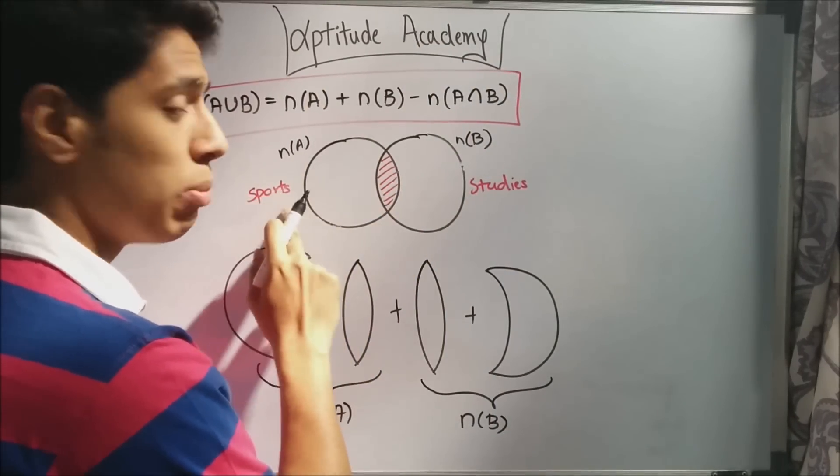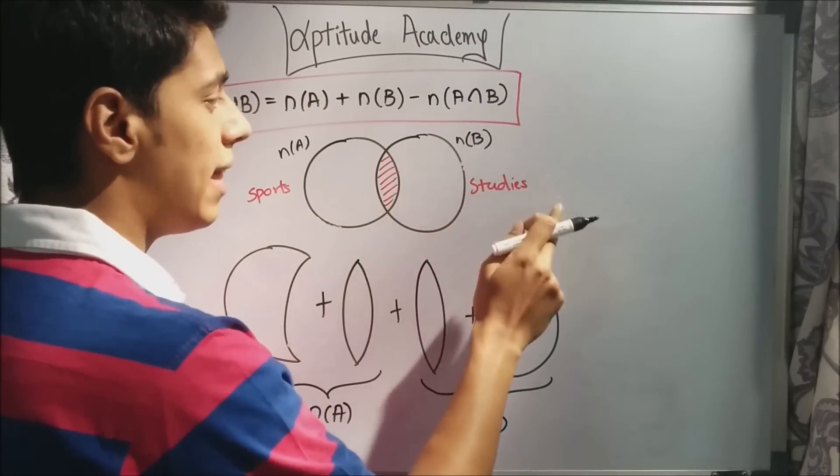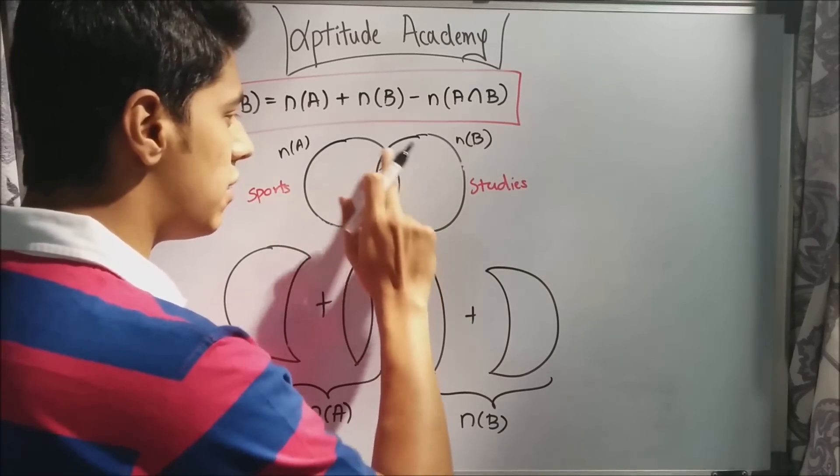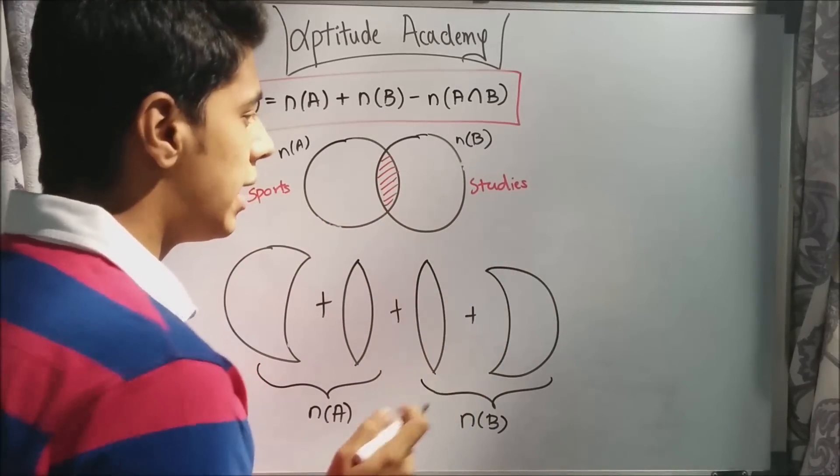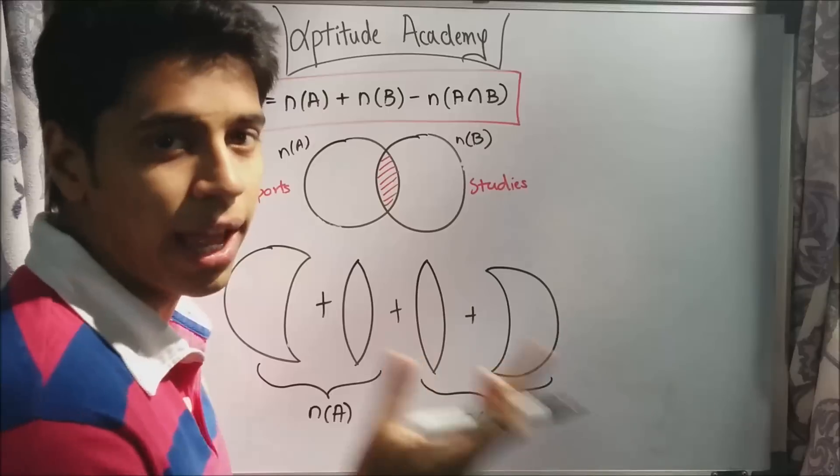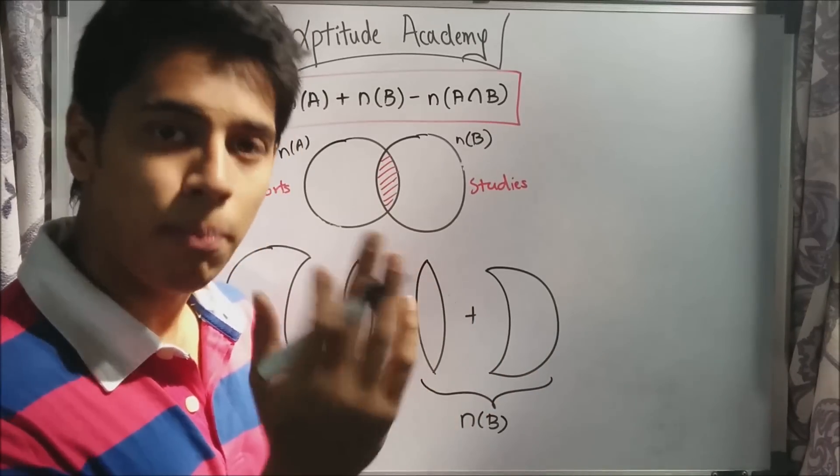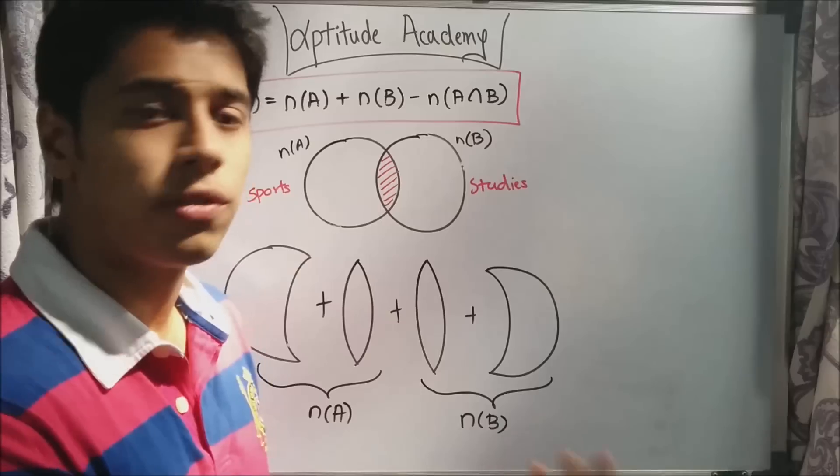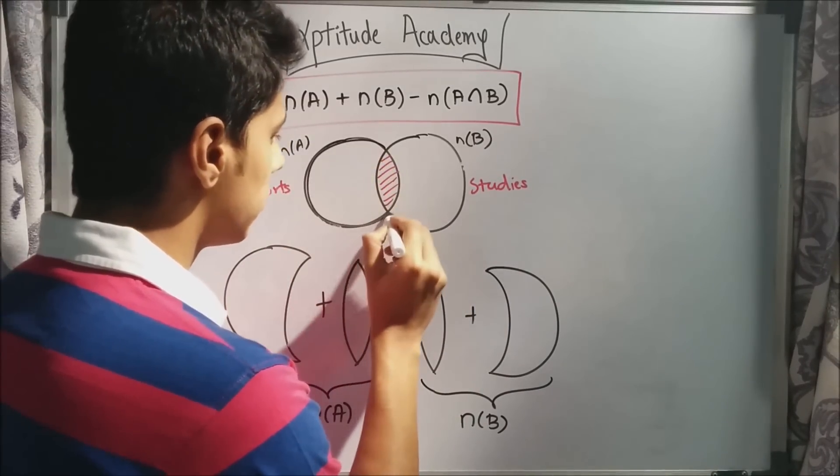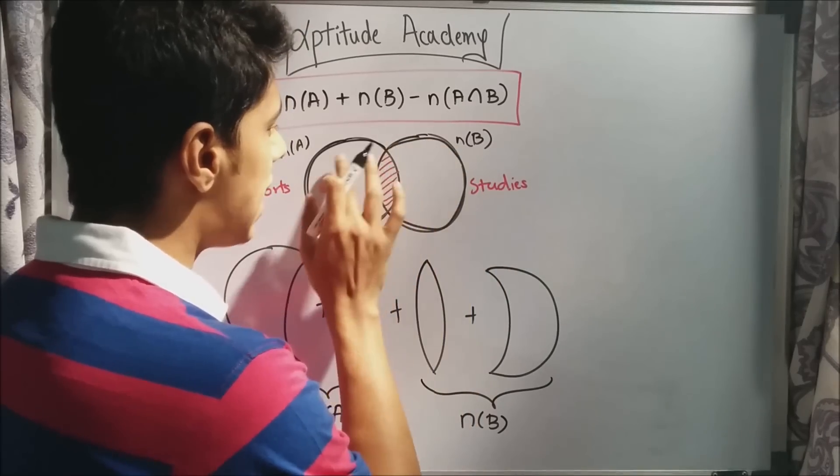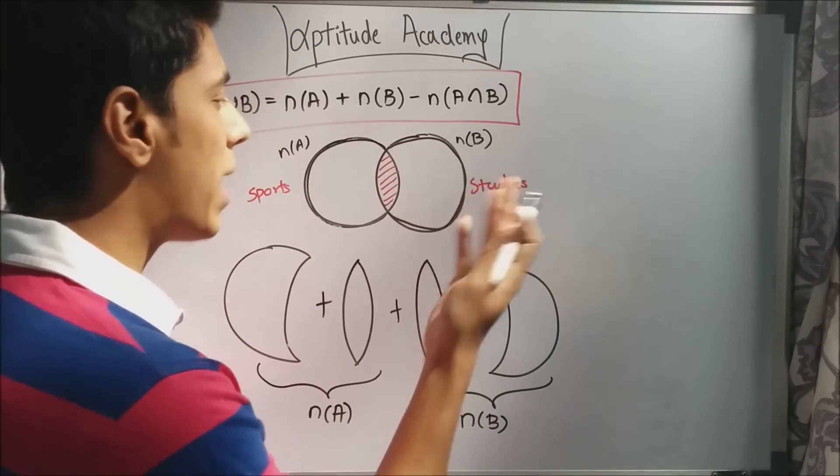Now, we said that n(A) are the kids who play sports, and n(B) are the kids who study. The intersection of this is the number of kids that play sports as well as study. Now, what is n(A union B)? n(A union B) are the kids that either play a sport or study or do both of them. That is this part, this entire thing. Now, how do you calculate that?